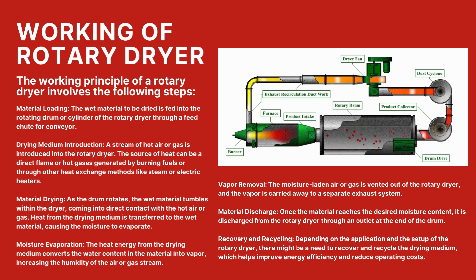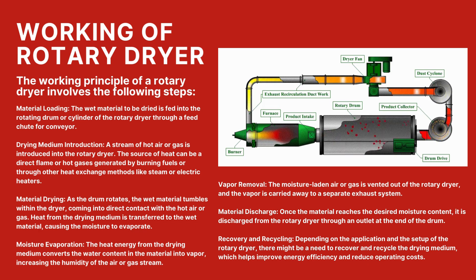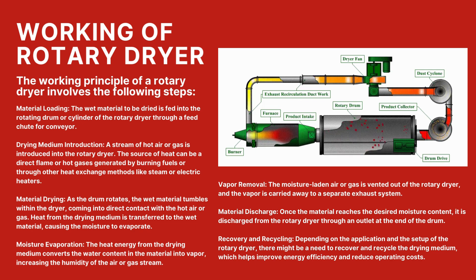Next is material discharge: the wet materials attain the desired moisture content value and are discharged from the rotary dryer through an outlet provided at the end of the drum. Last is recovery and recycling: the drying medium generally used is air, which is free of cost, but the heat energy required to heat the air may need to be recovered. This is done to increase energy efficiency and reduce operating costs.